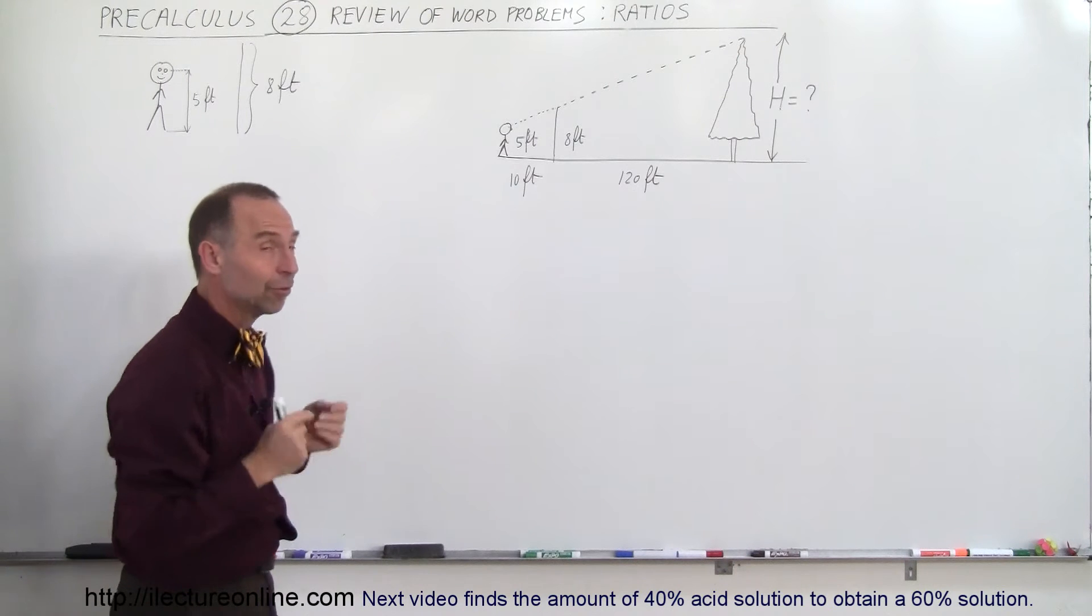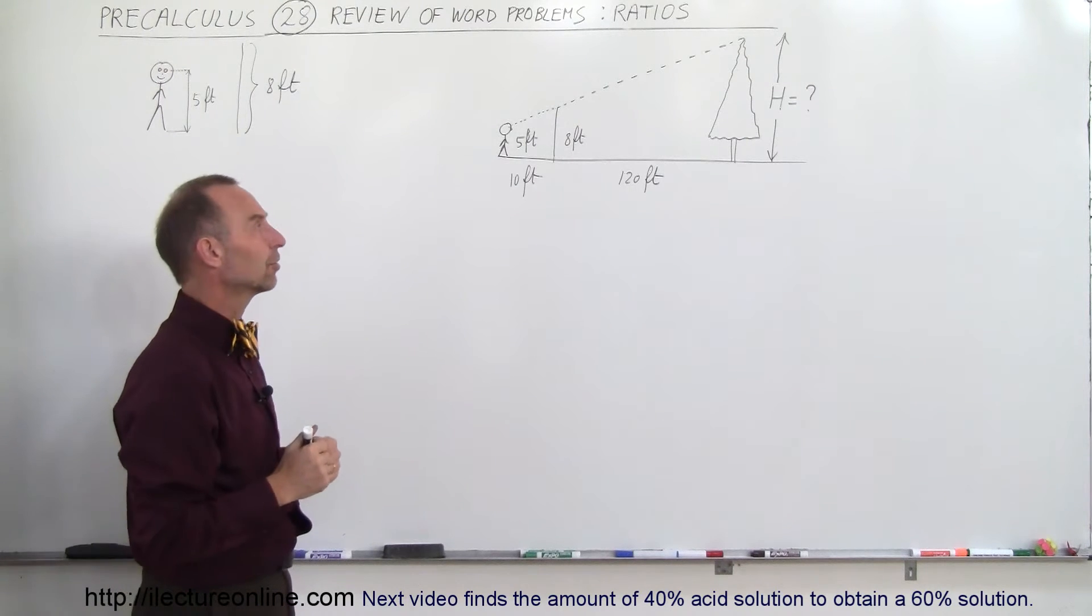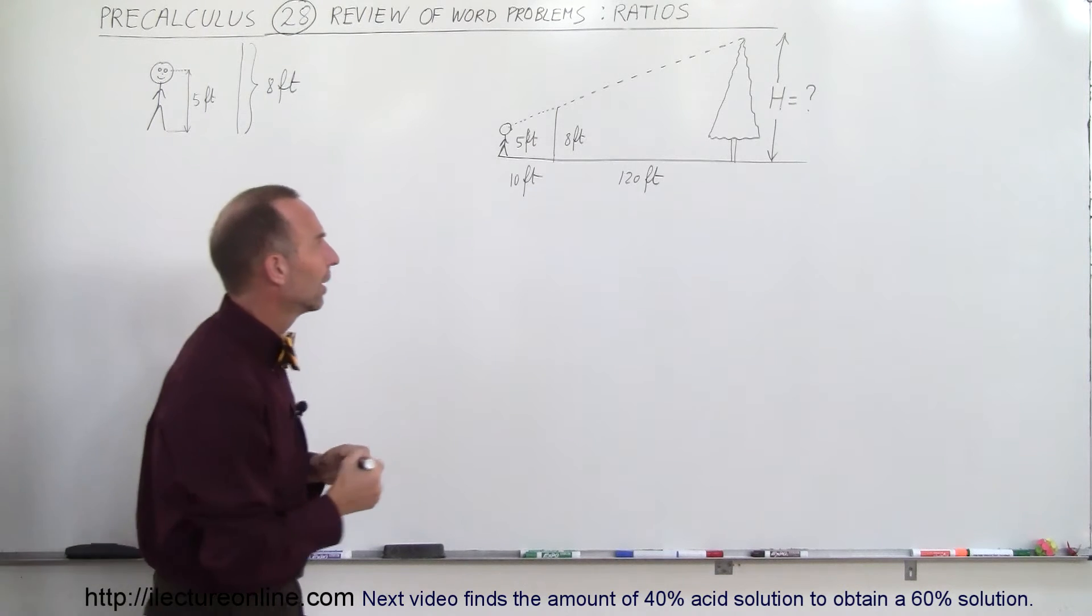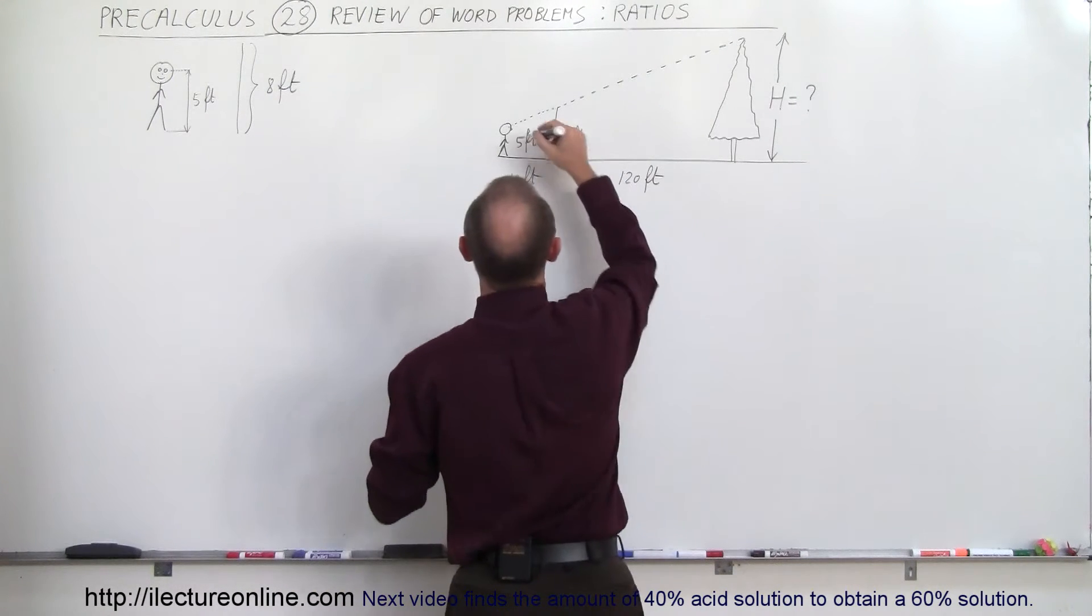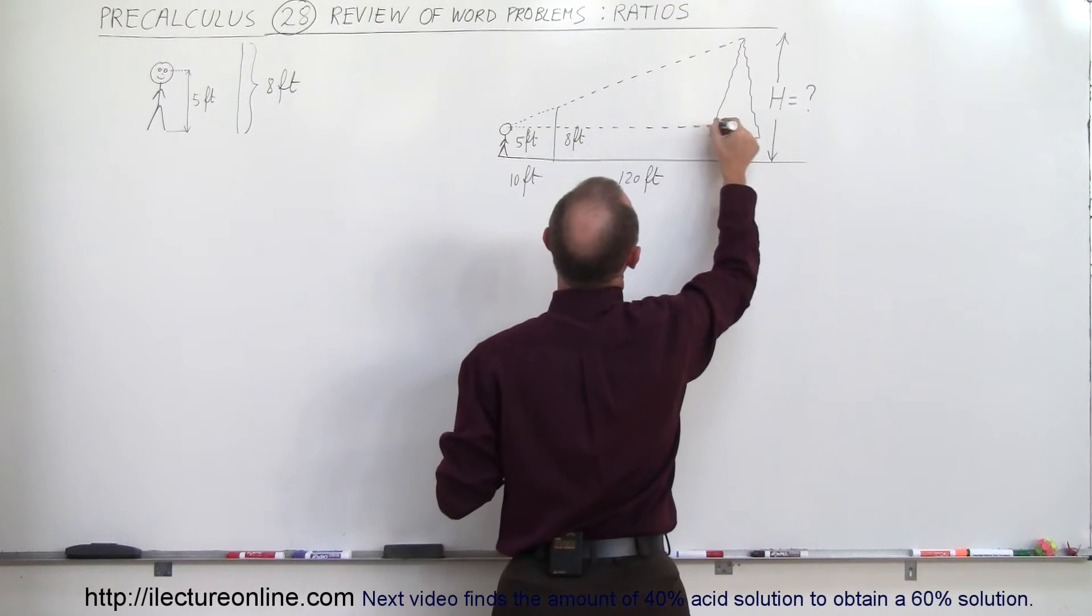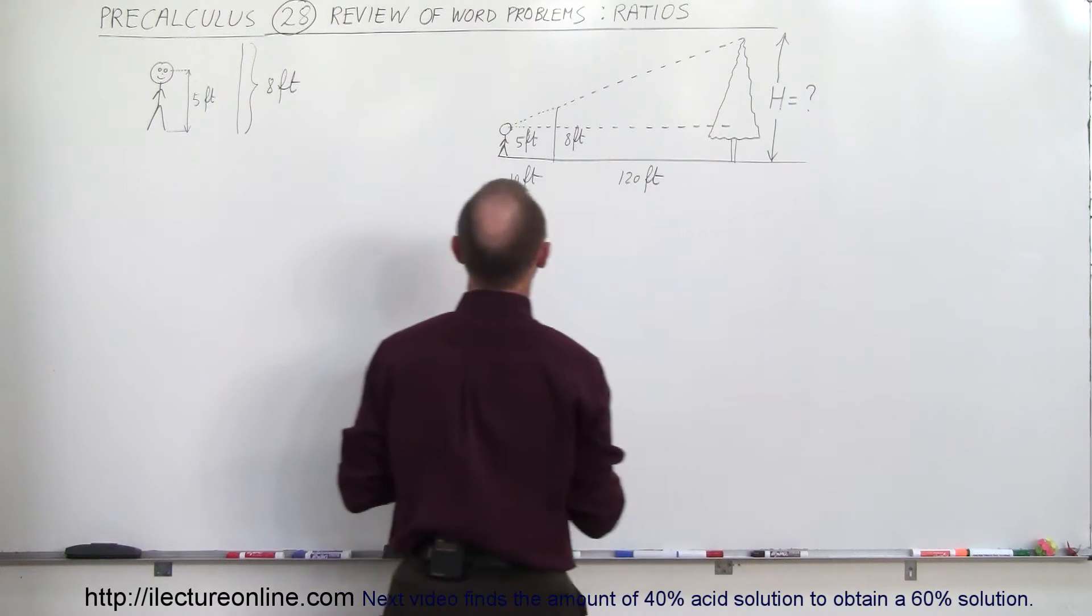The question is can you help this person figure out how tall the tree is. And so what we want to do is we want to do a ratio of triangles, and the best way to do that is to draw a line from the eyeballs all the way over to the tree like this, and now we have two triangles.